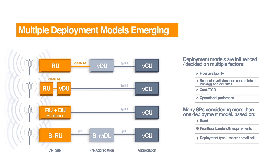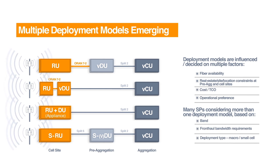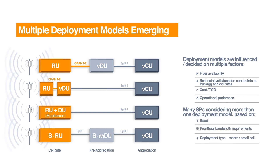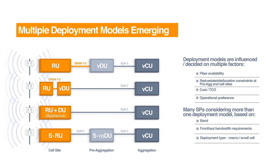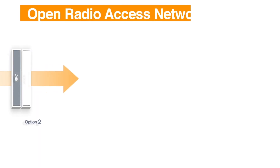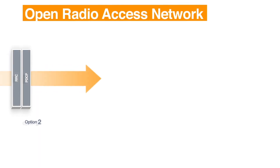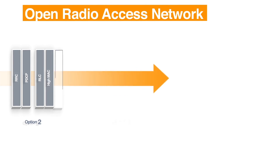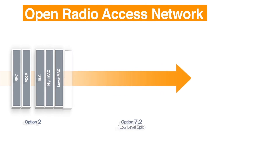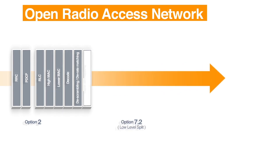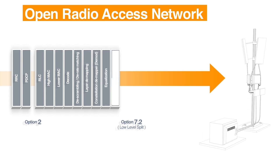One of the key interfaces is the front haul, which connects the radio unit to the distributed unit. ORAN specifies the low-level split LLS architecture for the physical layer in the frequency domain between the RU and the DU. This is a frequency domain interface and helps to reduce the load on the front haul.